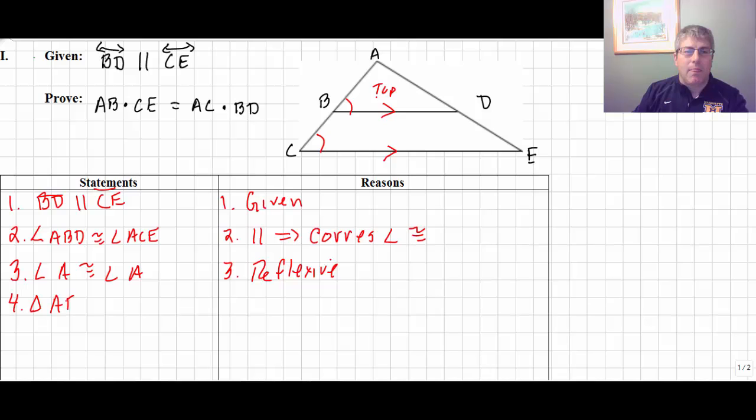So why don't I just do angle A congruent to angle A by reflexive, and then my two triangles are similar by angle-angle. So I've got triangle ABD is similar to triangle ACE by angle-angle similarity, and steps two and three.